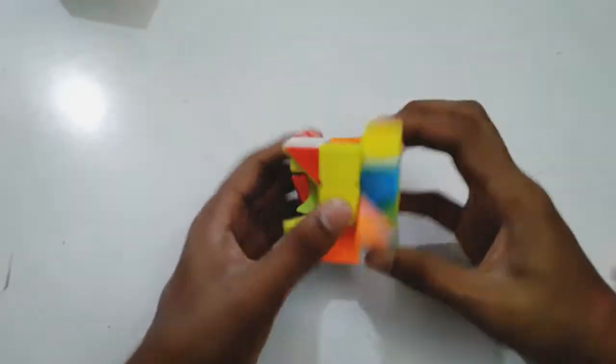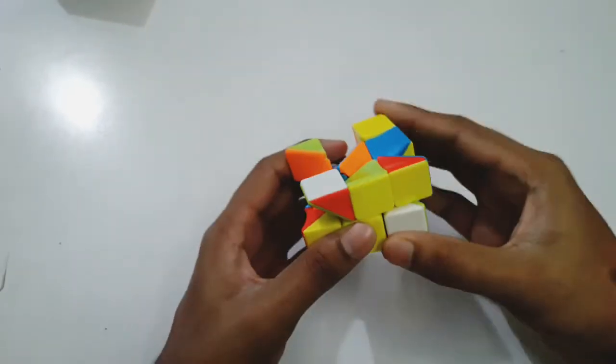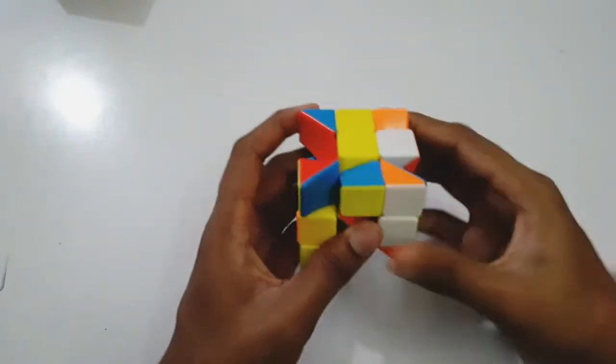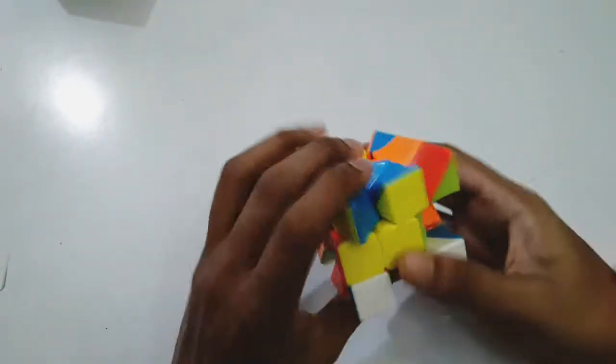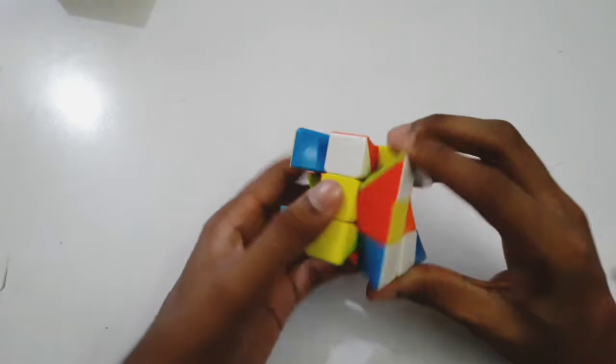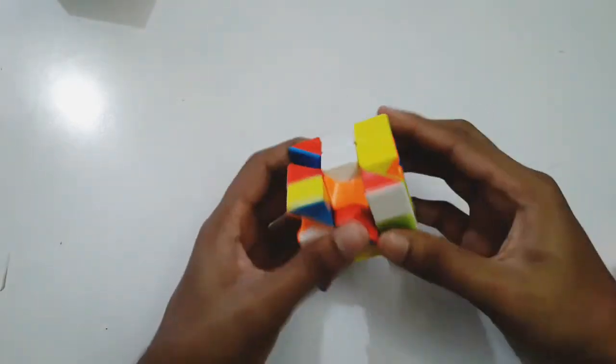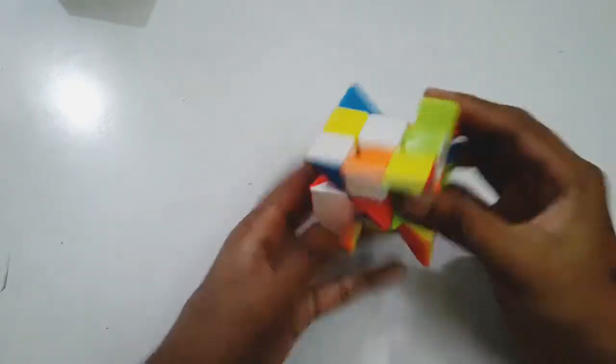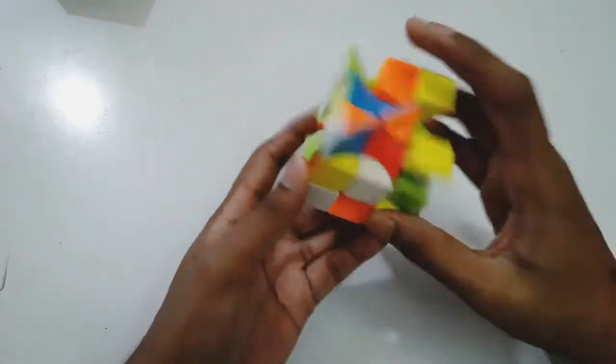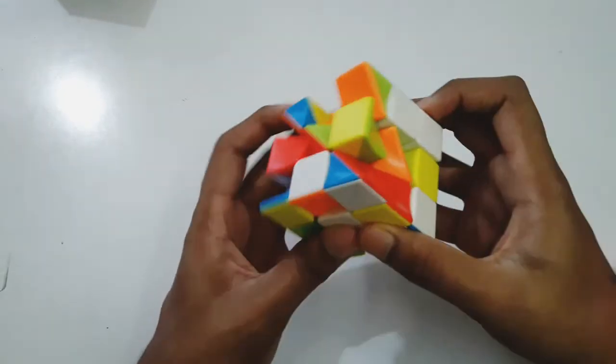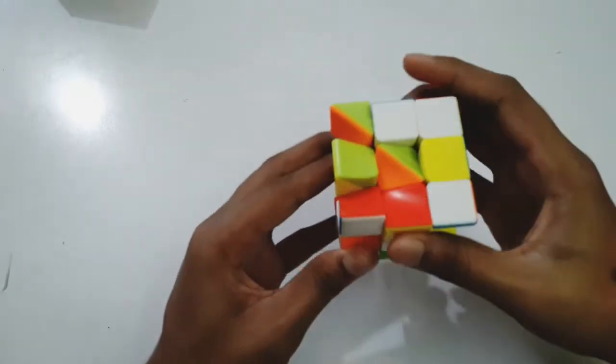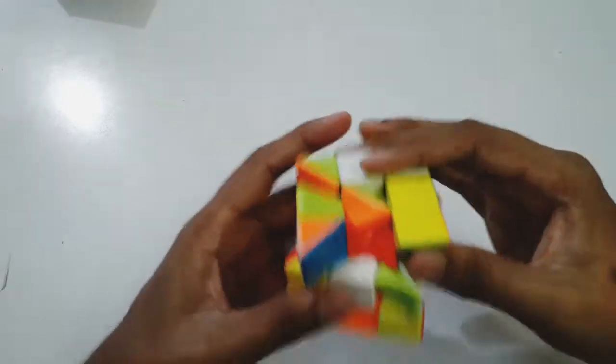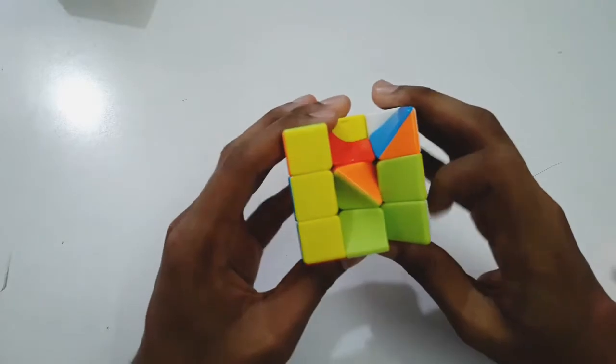At first we will try to solve it without any help. Oh, this cube is shape-shifting. I don't know if this is even scrambled or not. I think this is scrambled enough. So at first we will make the centers.